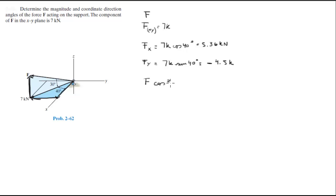cosine 30 equals 7kN, because this is F and this is 7kN, so F cosine 30 equals 7kN.